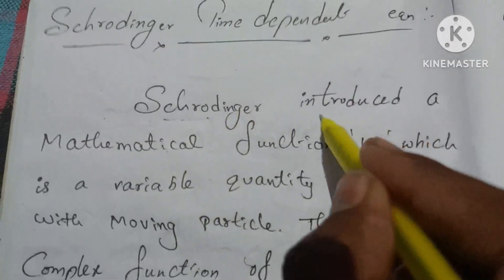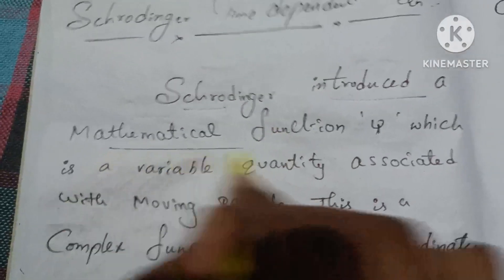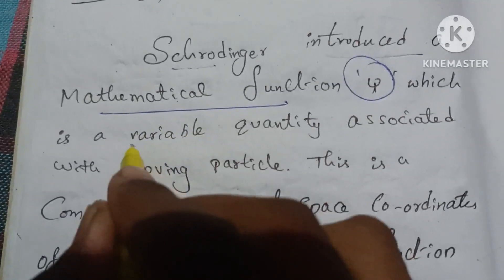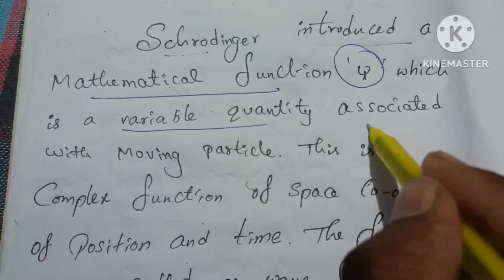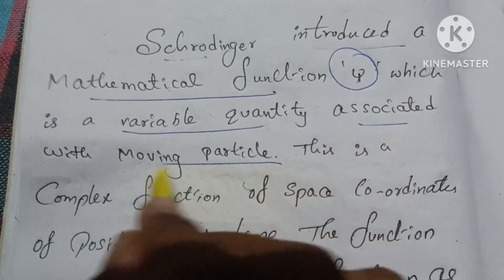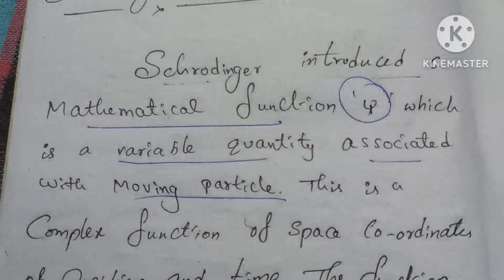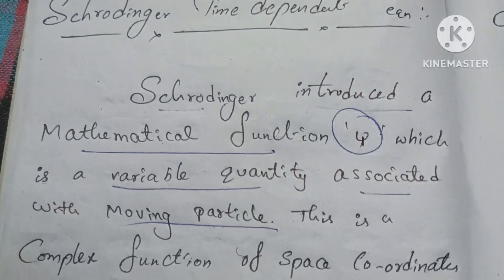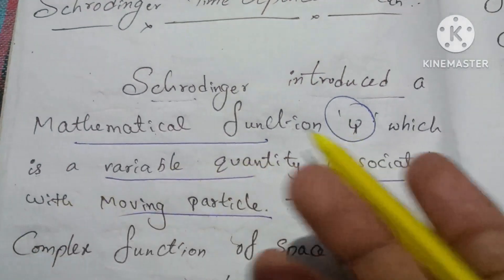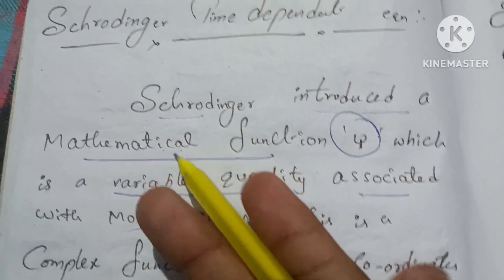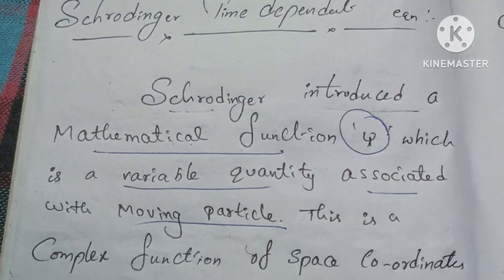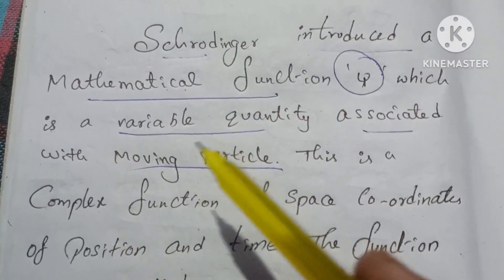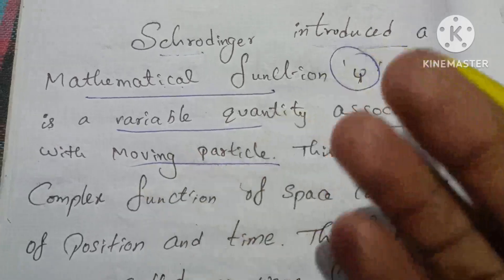The mathematical function — Schrödinger will introduce the mathematical function, which is a variable quantity associated with the moving particle. Schrödinger introduced this mathematical function, which is associated with the moving particle.